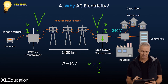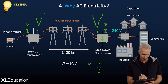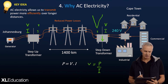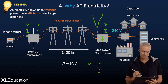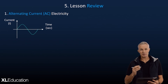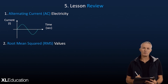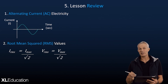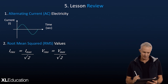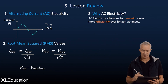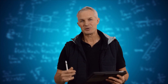Quick review: AC current is current that goes in both directions — usually a sinusoidal curve. That forces us to use RMS values to get a real value for what the current or voltage is. RMS values are equivalent to the DC current or voltage that would deliver the same power. And finally, why do we use AC? Because AC electricity allows us to transmit power more efficiently over longer distances. Do some practice questions to consolidate all these ideas.